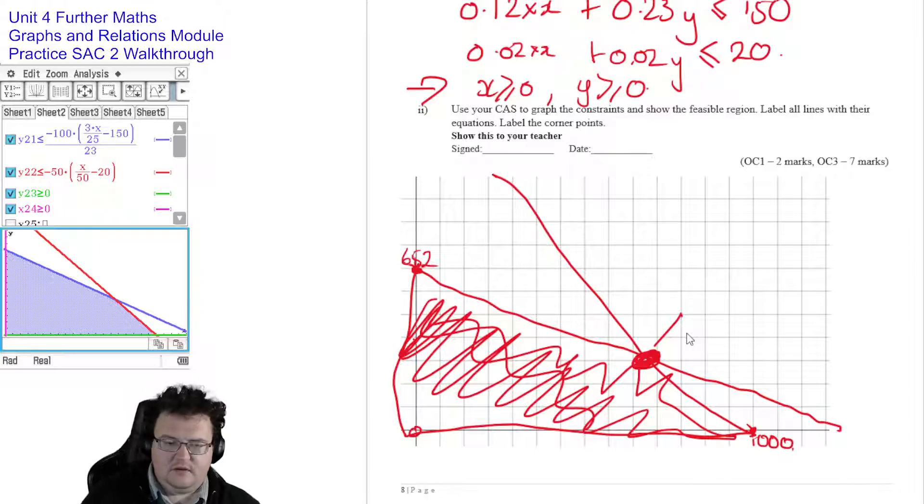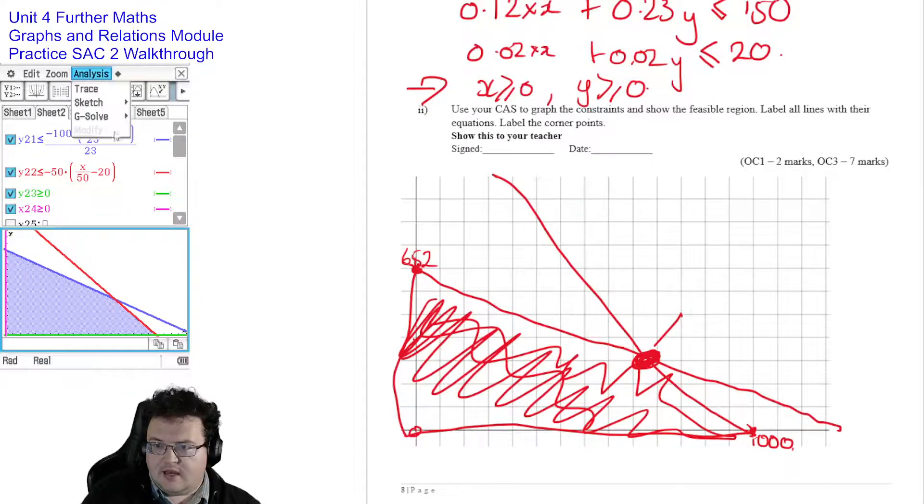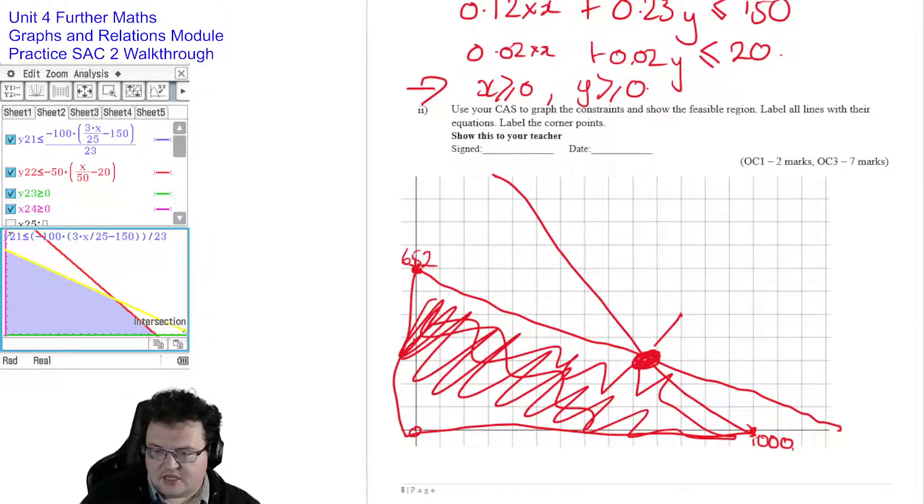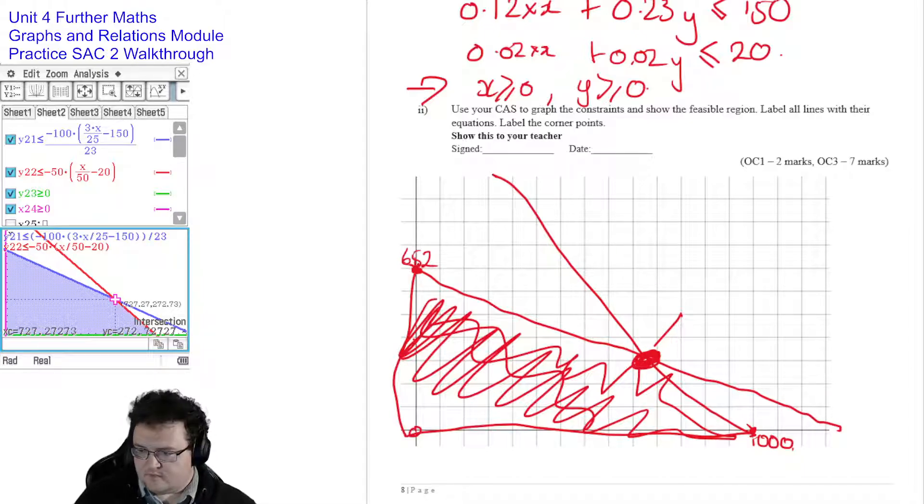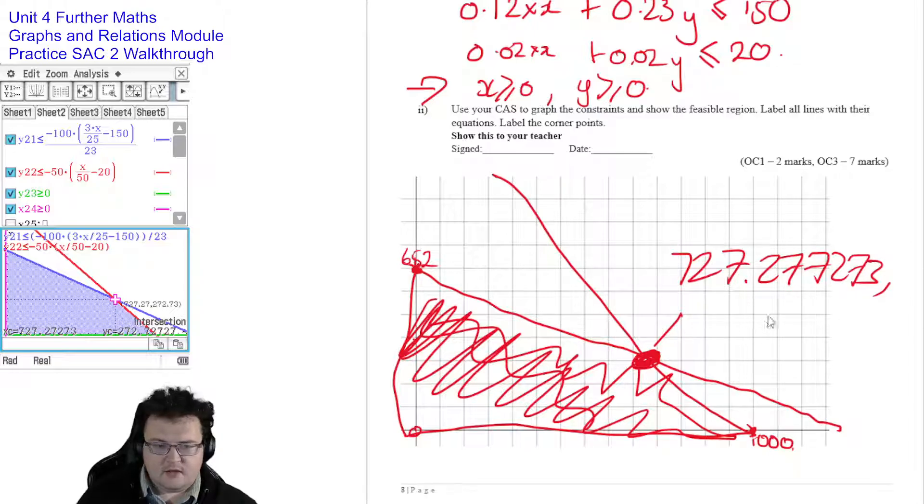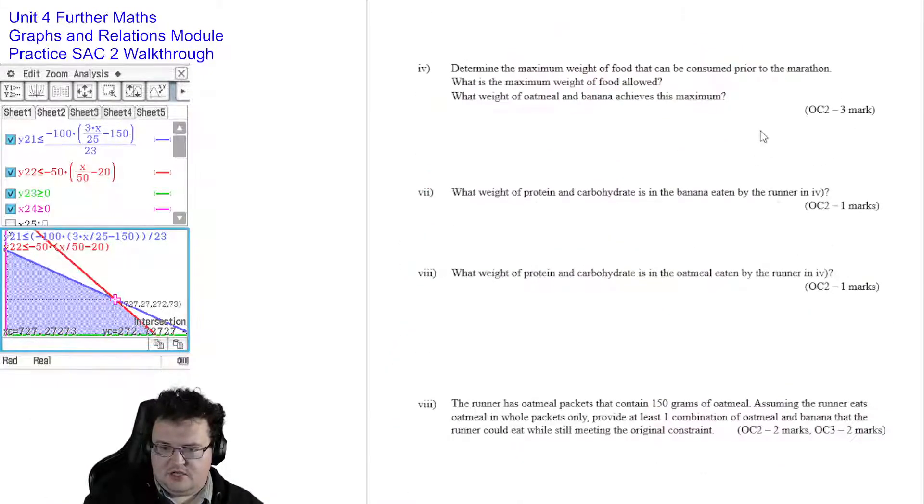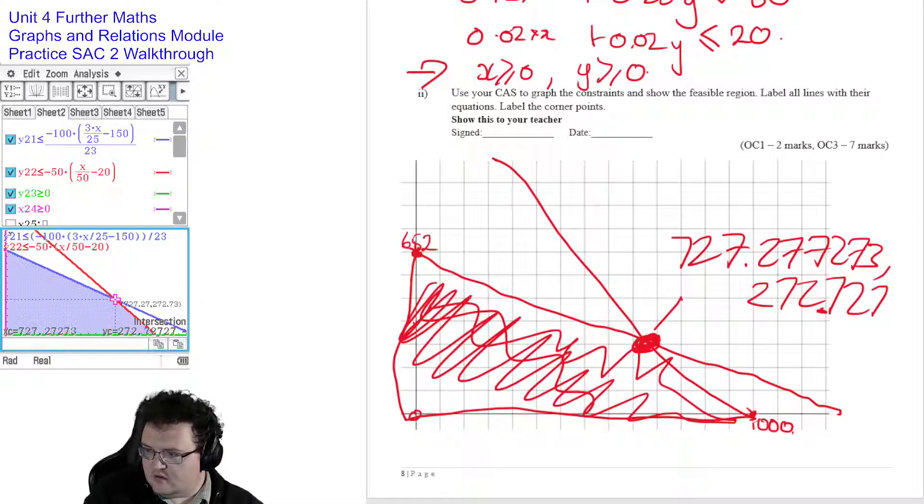So we just need to find that point as well, which we can do on our CAS. Analysis, G-solve, Intersection. And it comes up as 727.27727 comma 272.7272. Yeah. We'll keep going. Alright. Again, you've shared the feasible region. So now what we need to do is, I'm assuming this is going to be a maximized problem.